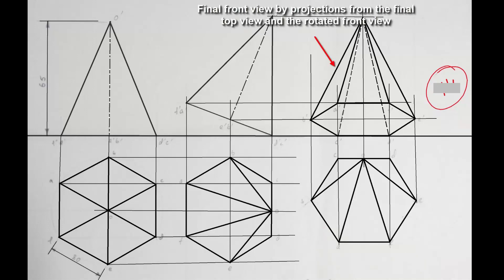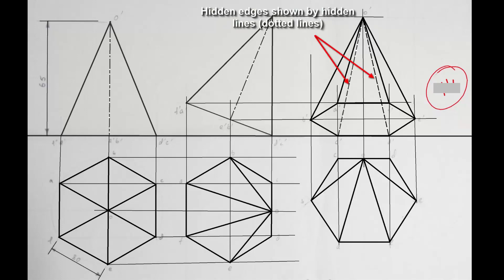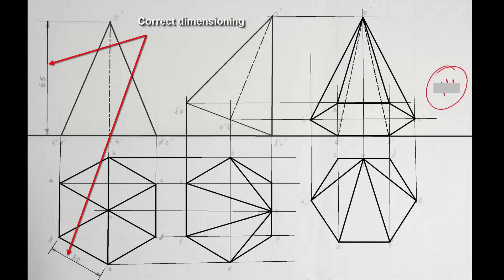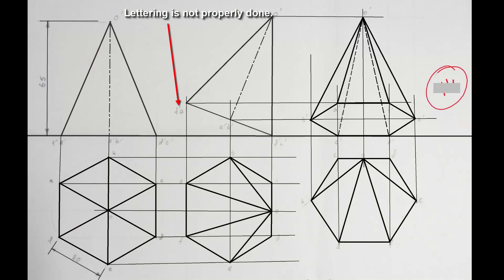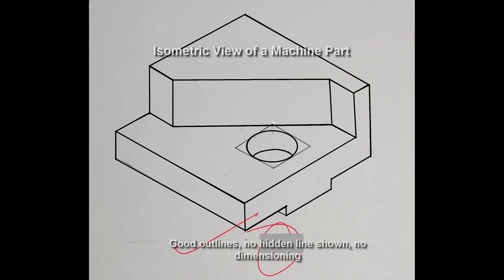Correct rotation of the first top view for the final top view. Final front view by projections from the final top view and the rotated front view. Hidden edges shown by hidden lines which are dotted lines. Correct dimensioning has been done. However, the lettering is not properly done. So it should be technical writing and not handwriting.